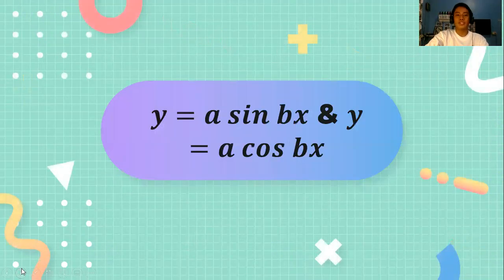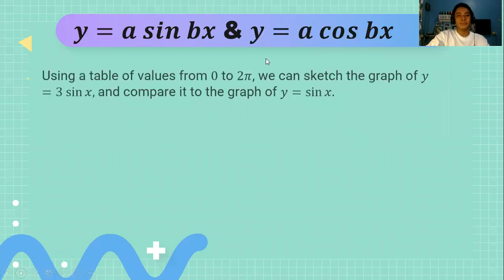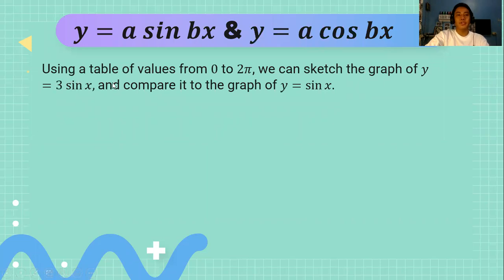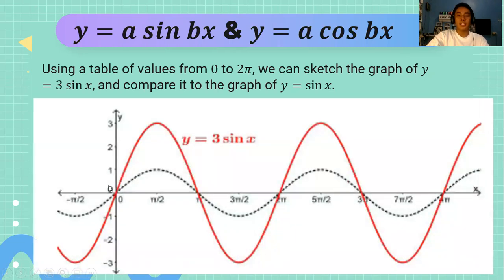Let us consider y = a·sin(bx) and y = a·cos(bx). Using a table of values from zero to two pi, we can sketch the graph of y = 3sin(x) and compare it to the graph of y = sin(x). Notice that we now have a value for a, wherein a = 3. This is how the graph would look like. What do you notice?